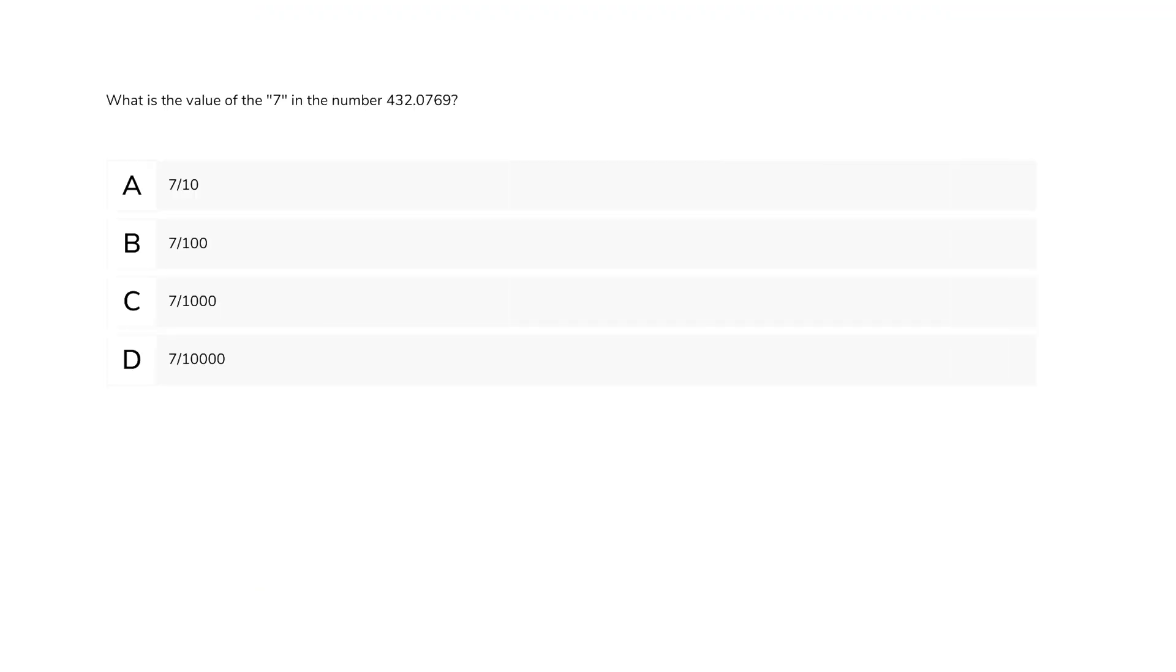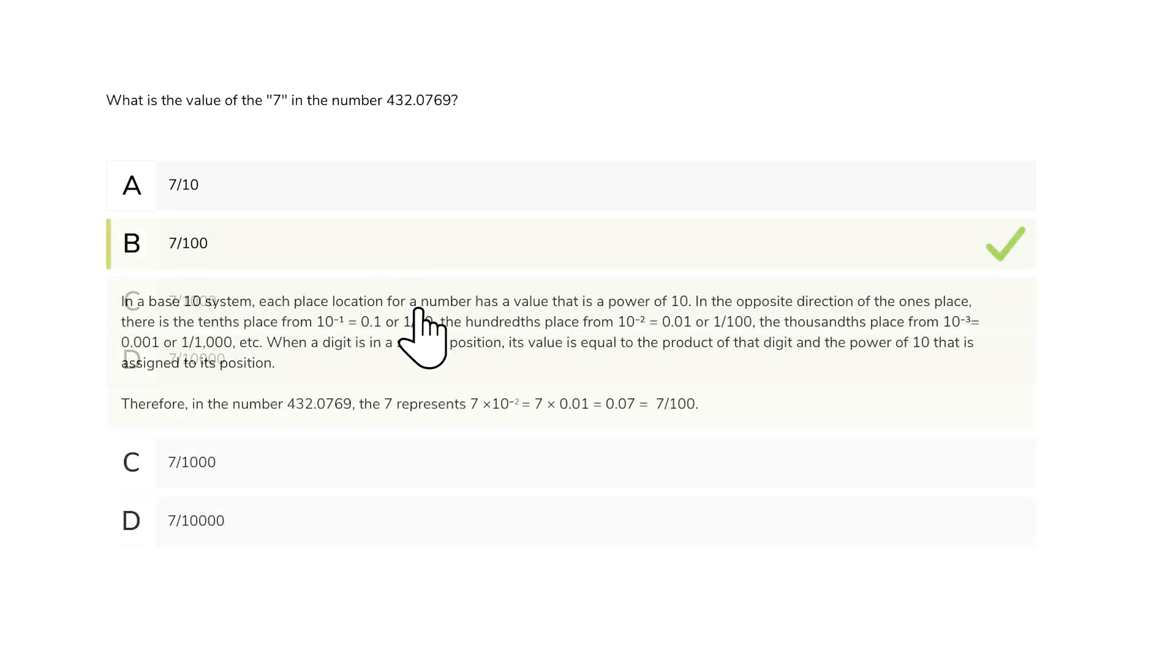Remember way back in the beginning of this video when we talked about place value? Let's look at how that is reflected in a question. What is the value of the seven in the number 432.769 ten-thousandths? The seven is the second number after the decimal. So it has the value of seven hundredths or seven divided by 100. So this is the correct answer.